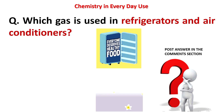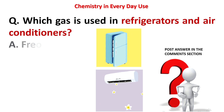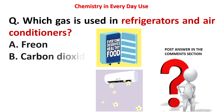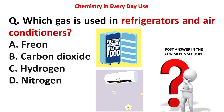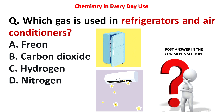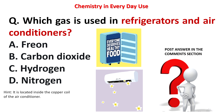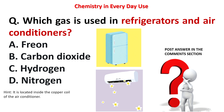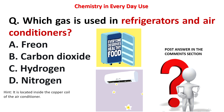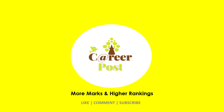Next question: which gas is used in refrigerators and air conditioners? Options: Freon, carbon dioxide, hydrogen, or nitrogen. Try to post your answer in the comment section — hint: it is located inside the copper coil of the air conditioner. Find out the answer and post in the comment section. Thank you, subscribe to Career Post for more marks and higher rankings.